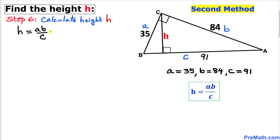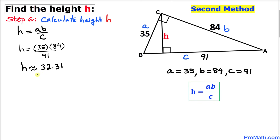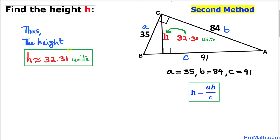In the final step, we calculate the height h using this formula: h equals 35 times 84 divided by 91, which gives h approximately equal to 32.31 units. Thanks for watching and please don't forget to subscribe to my channel for more exciting videos. Bye!